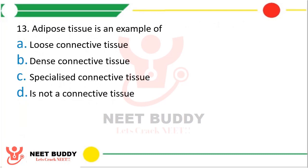Question number thirteen: Adipose tissue is an example of — option A, loose connective tissue; option B, dense connective tissue; option C, specialized connective tissue; option D, it is not a connective tissue. The correct answer is option A, loose connective tissue.